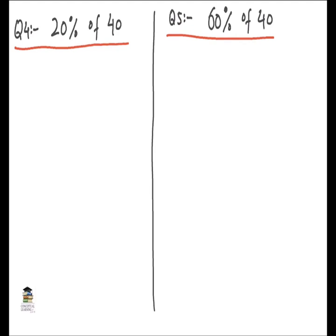Question 4 is 20% of 40 and Question 5 is 60% of 40. In this kind of question, percentage is provided, so we divide by 100. The number with the percentage sign is divided by 100, so we write 20 over 100 times 40 over 1. We can simplify: 20 and 100 both have a zero at the end, so those zeros cancel. That gives us 2 over 10 times 40 over 1. We don't need to change denominator positions here as we can simplify 20 over 100 directly.